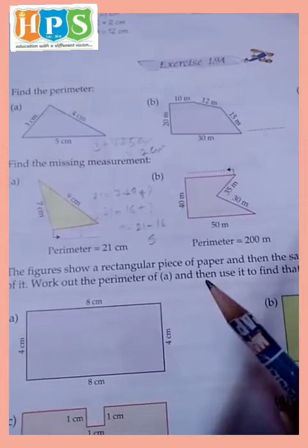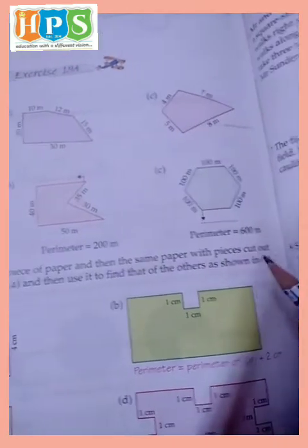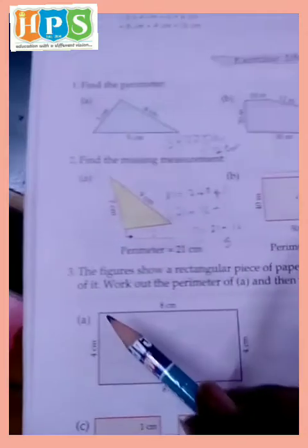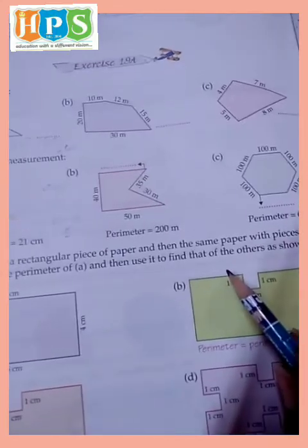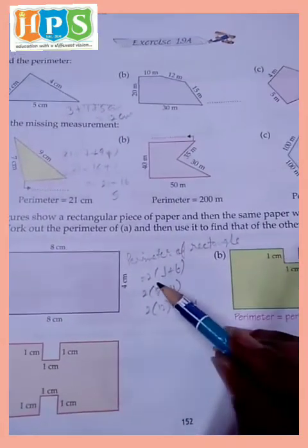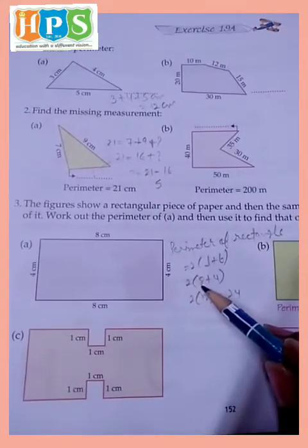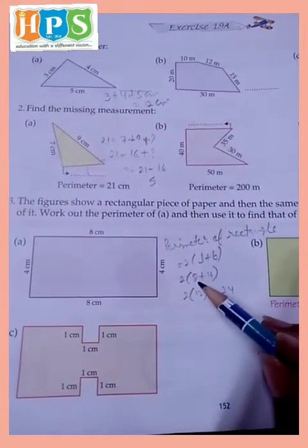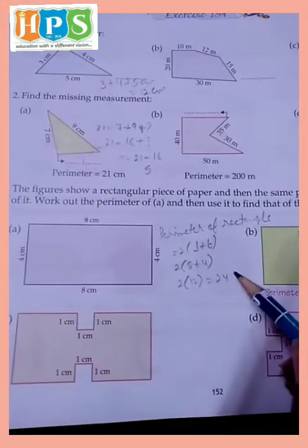The figure shows the rectangle piece of a paper and then the same paper with piece cut out of it. Work out the perimeter of and then use to find that of the other shown in B. Perimeter of rectangle is 2 into L plus B, so 2 multiply 8 plus 4. 8 and 4 is 12, 2 multiply 12 is equal to 24, 24 centimeter.